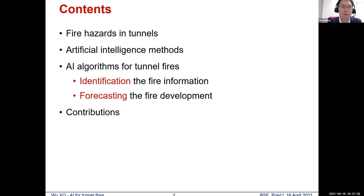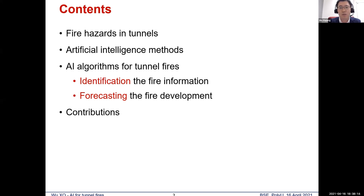The presentation will include the following parts. First, I will introduce the fire hazards in tunnel, which is our research significance. Then I will give a brief introduction about AI methods. After that, the main part of the presentation is applying AI for tunnel fire, which can be divided into two types of tasks: identification of fire information such as fire location, fire size, and ventilation in tunnel; and the other is forecasting — how the fire will develop in the next few minutes. Last, I'll cover the conclusion and contributions to the community of fire safety engineering.